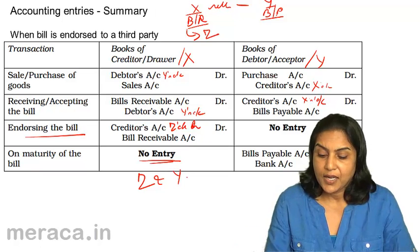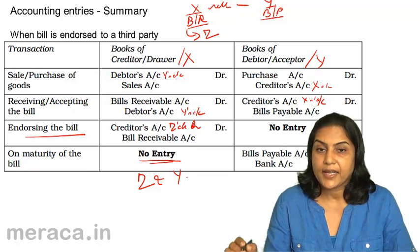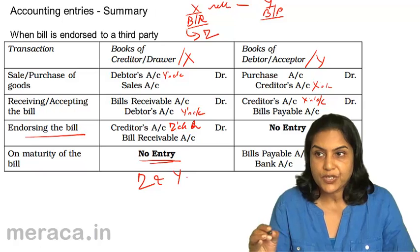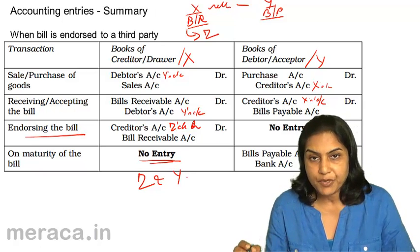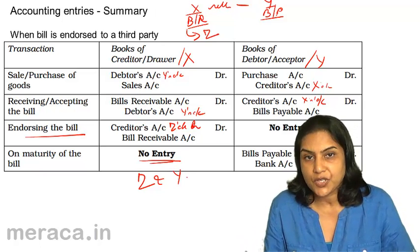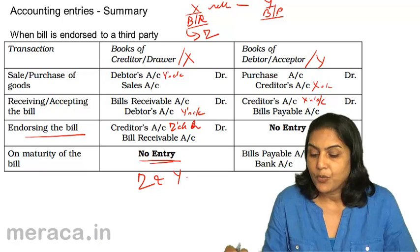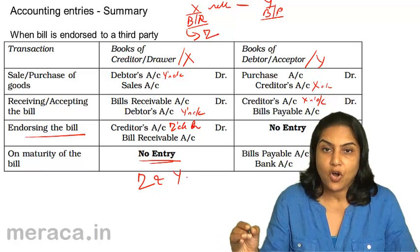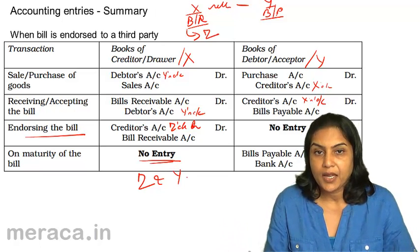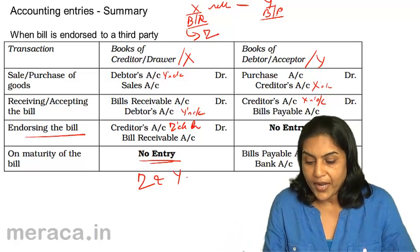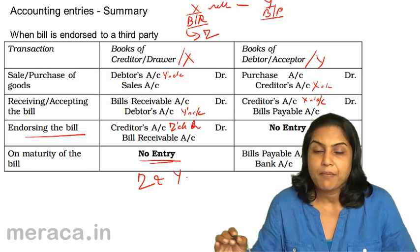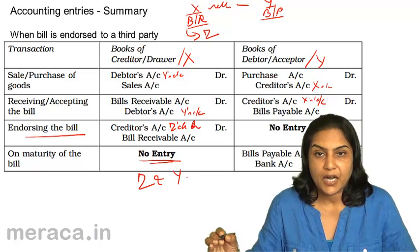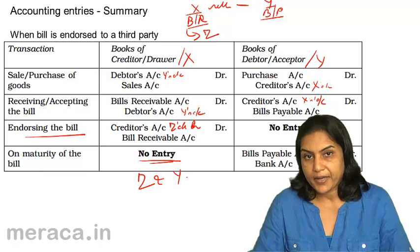Thus, we see that irrespective of whether X presented the bill, the bank presents the bill, or Z presents the bill — when the bill is honoured on maturity by Y, the entry in all cases is the same: bills payable account debit to cash or bank.